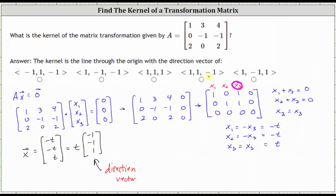If we look at our choices here, notice how we don't have a choice of the vector negative 1, negative 1, 1. That doesn't mean our work is incorrect. Remember, t could be any value. So if we let t, for example, equal negative 1, then the direction vector would be the vector 1, 1, negative 1. And notice this is one of the choices, it's the fourth choice here. So we would have to select the vector 1, 1, negative 1 for the direction vector for the line that represents the kernel of the matrix transformation.